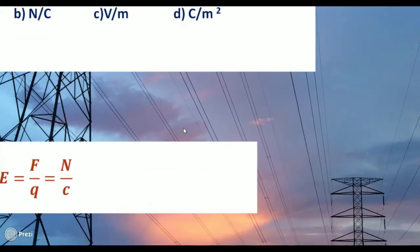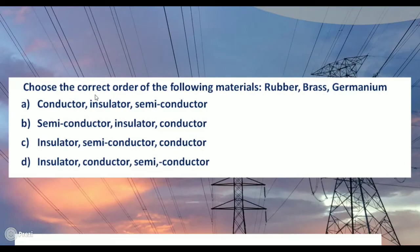Next question: Choose the correct order of the following materials: rubber, brass, germanium. These are three types of materials - conductor, insulator, semiconductor. Rubber is an insulator, so insulator appears first. Options C and D have insulator first.